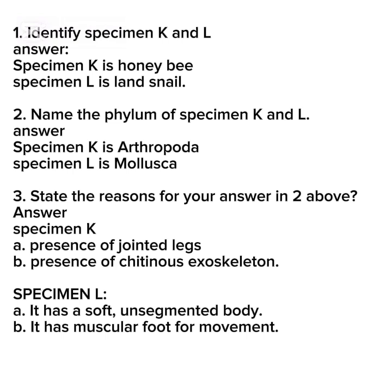Question two: name the phylum of Specimen K and L. Answer: Specimen K is Arthropoda; Specimen L is Mollusca. Question three: state the reasons for your answer. For Specimen K: presence of genital glands and presence of chitinous exoskeleton. For Specimen L: it has a soft unsegmented body and a muscular foot for movement. These are the reasons why we classify them as Arthropoda and Mollusca.